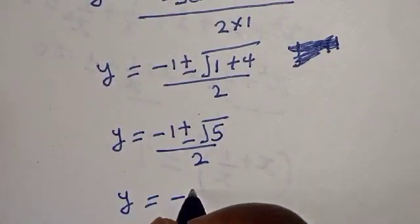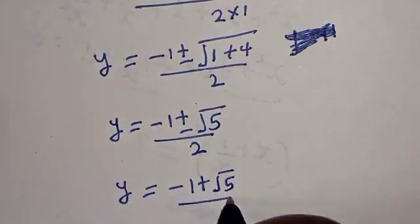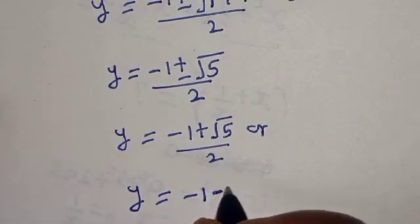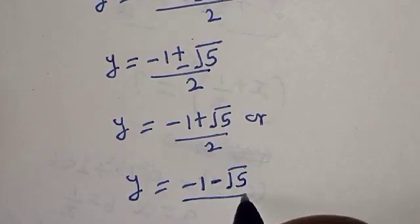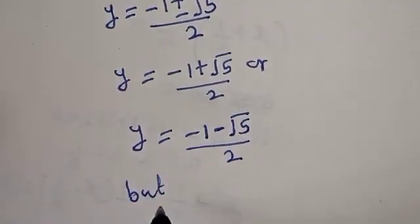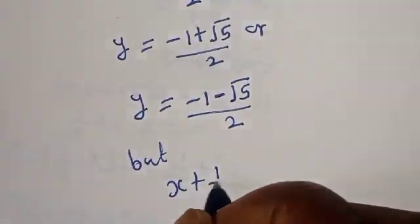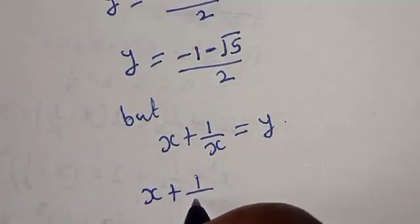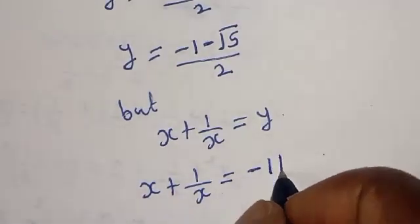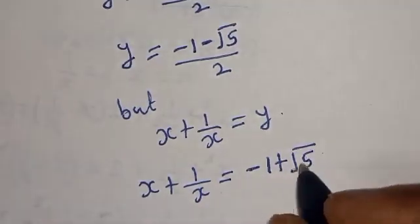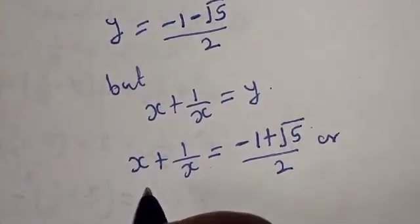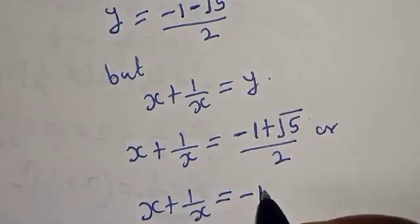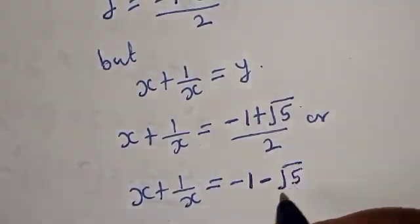Therefore y equals minus 1 plus or minus square root of 5, all over 2. So we have two values: y equals minus 1 plus square root of 5 over 2, or y equals minus 1 minus square root of 5 over 2.